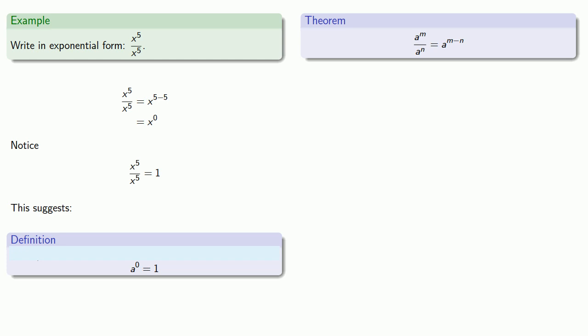And this suggests that a to power zero must be equal to one. Well, not quite. There is one important thing we have to worry about. Because we get this result by dividing something by itself, it's important that we not try to divide by zero. And so this argument works as long as our base is not equal to zero. So we have to add the qualifier for a not equal to zero. A to power zero is equal to one.